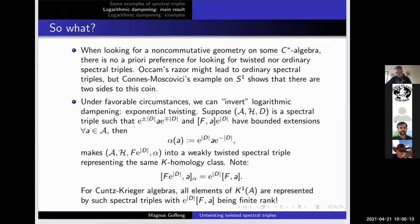These are extremely strong assumptions to make, but if they're true you can define a weak twist — not necessarily preserving the algebra — by conjugating by e^{|D|}. And this produces a weakly twisted spectral triple that represents the same K-homology class. If you start from something exponentially summable, you will exponentially twist it to something finitely summable. This partially inverts logarithmic dampening. One crucial property is that the twisted commutator for this choice of twist is really just e^{|D|} times the ordinary commutator with F. This offers Cuntz–Krieger algebras where you can represent all elements of K-homology by spectral triples of that type — and the commutator with F is even finite rank.